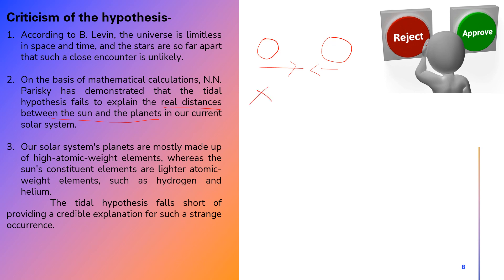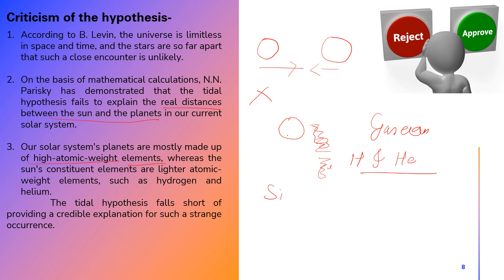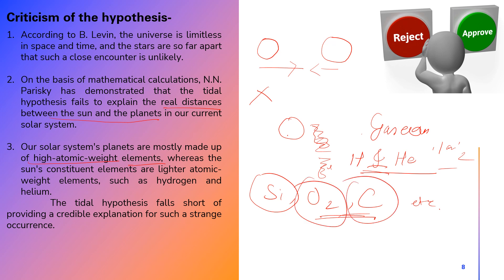The third criticism concerns the composition of the planets. In both Jeans' and Jeffries' hypotheses, the material that formed planets was gaseous and composed of light elements — hydrogen and helium. However, the building materials of the planets include heavier elements with higher atomic weights, such as silica, oxygen, and carbon. It is difficult to explain how lighter elements converted into these heavier element planets.